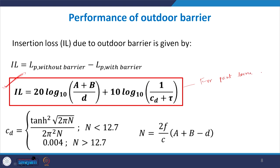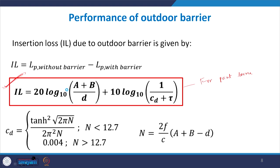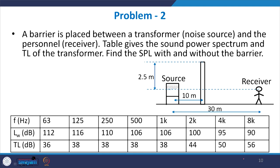The insertion loss, obtained by subtracting the two expressions, comes out to be a formula valid under a point source assumption. However, for highway barriers with a moving line source, the same insertion loss expression takes a slightly modified form. Let us now solve a numerical on barriers.